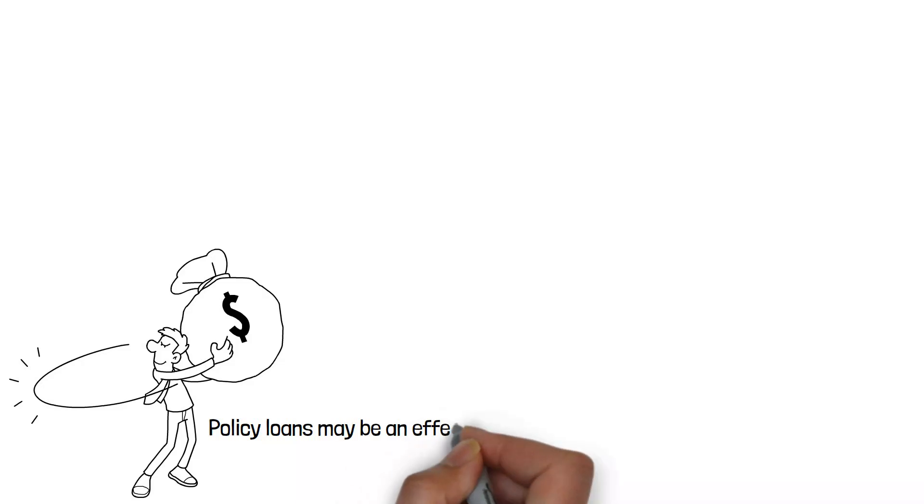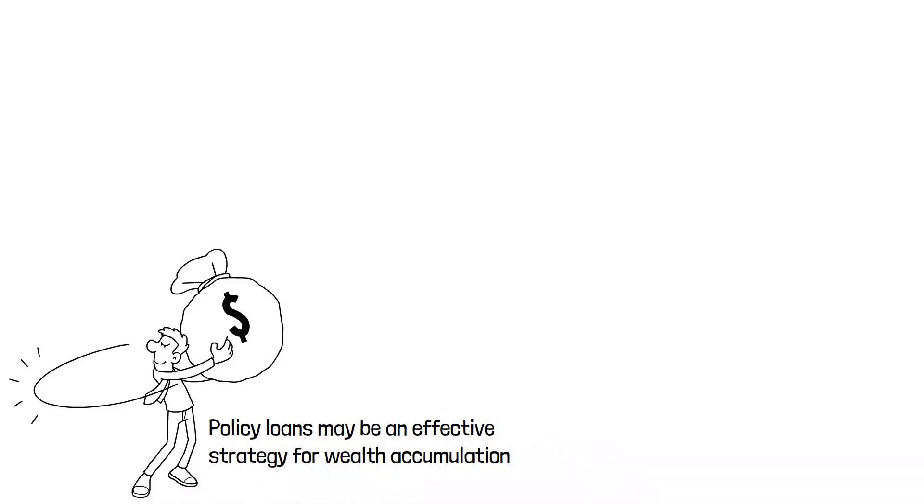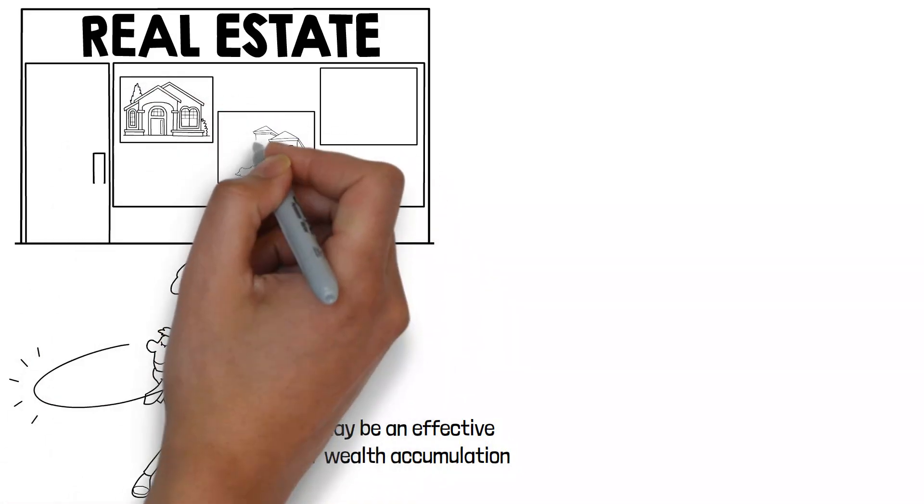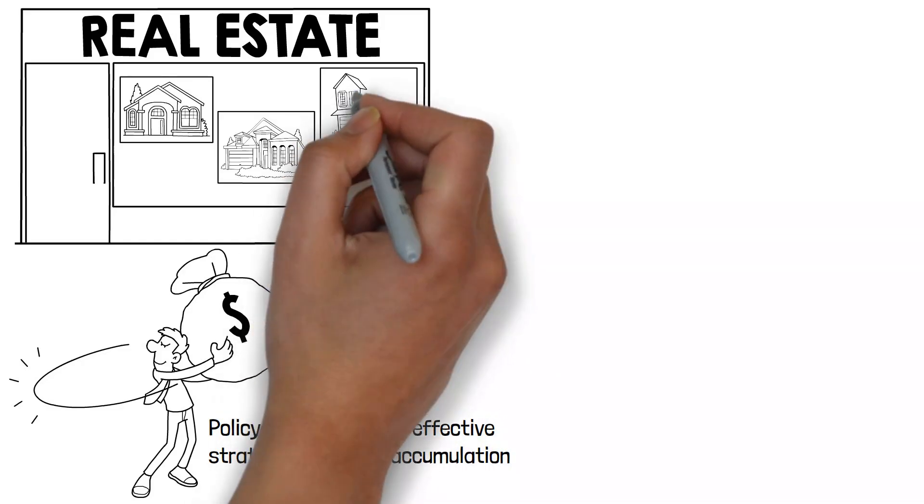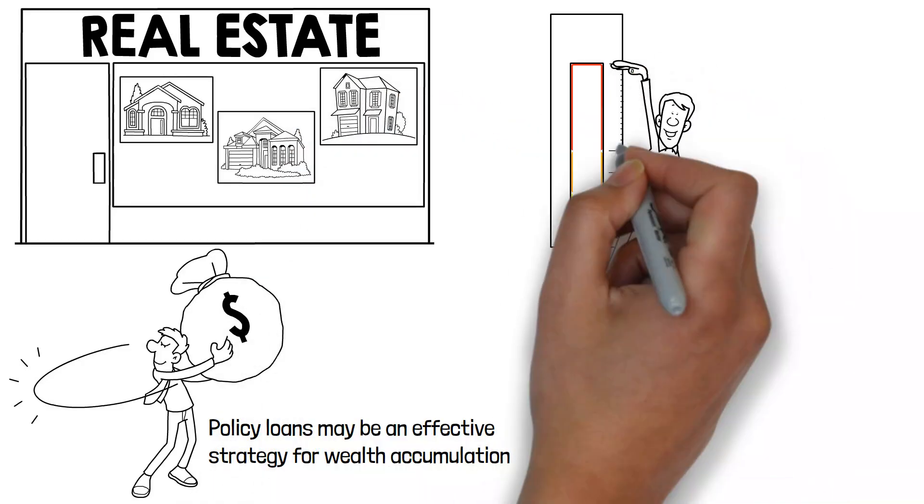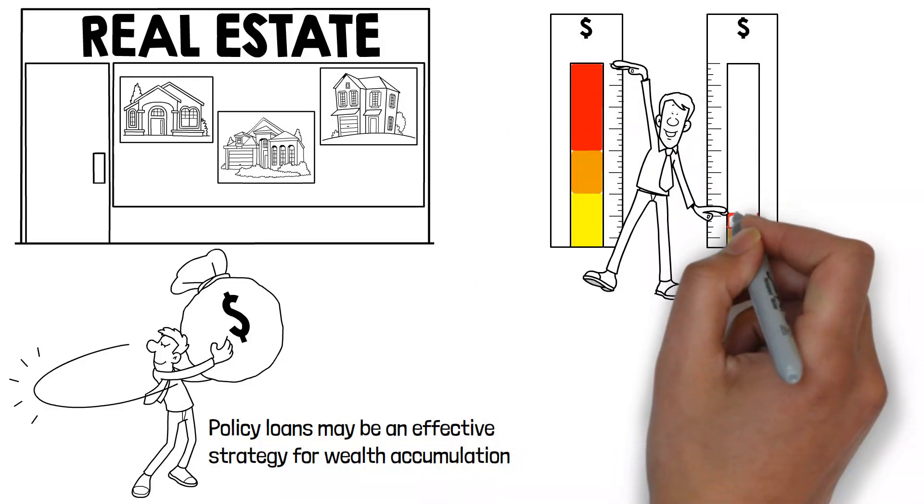Policy loans may be an effective strategy for wealth accumulation. For example, a policy loan may be used to invest in real estate, equities, or other businesses that provide a larger return on investment than the loan's interest rate. This leverage might increase your returns and speed up your wealth building.